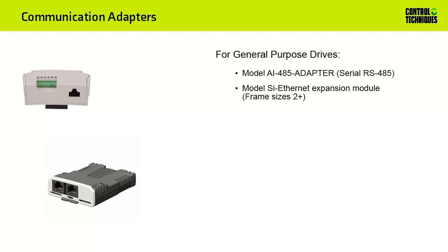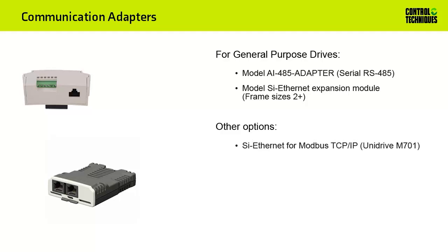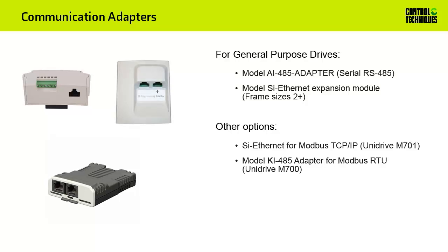The Unidrive M400 will require either the AI-485 adapter or the SI Ethernet module, depending on the type of Modbus communication desired. You may also add a SI Ethernet module to a Unidrive M701 to provide Modbus TCP-IP communication. A Unidrive M700 may also communicate using Modbus RTU by adding a KI-485 adapter.